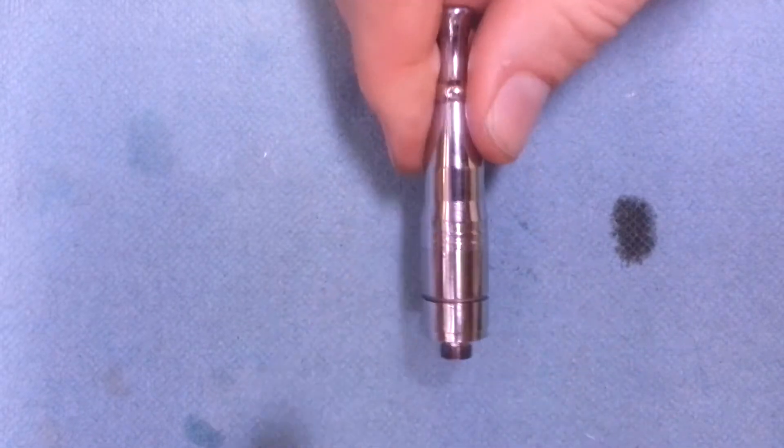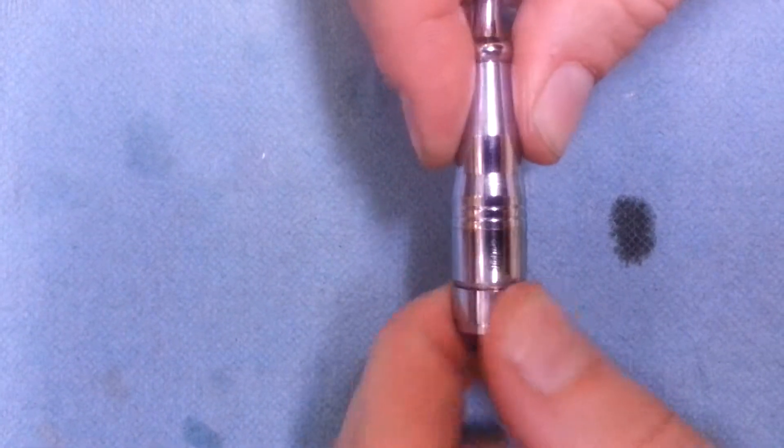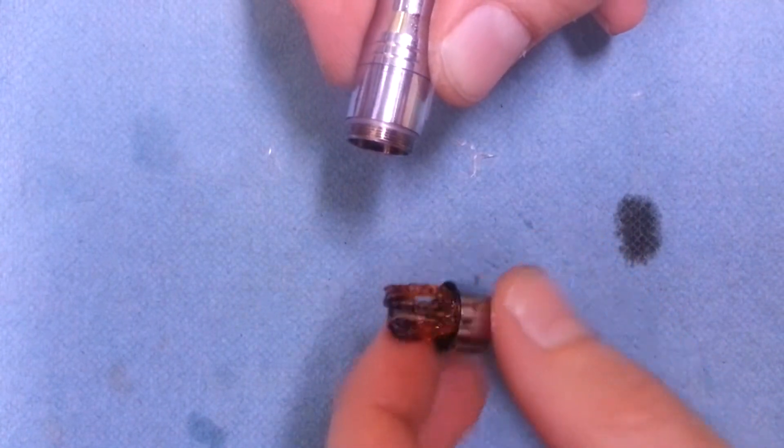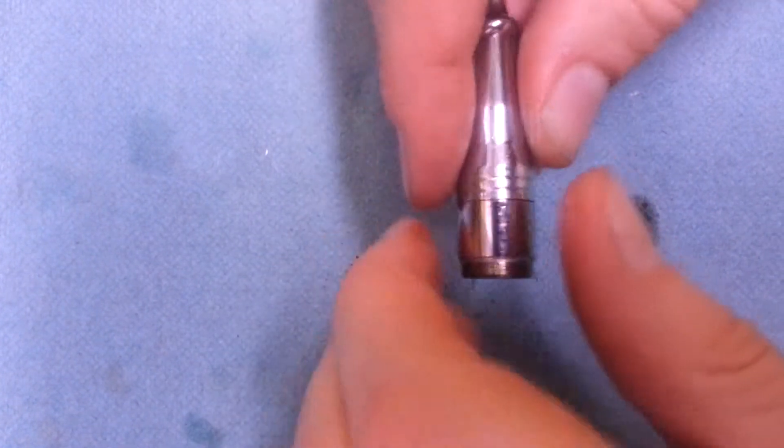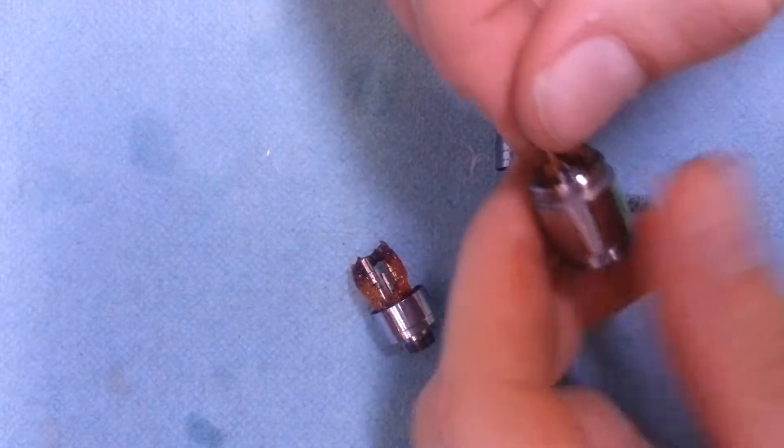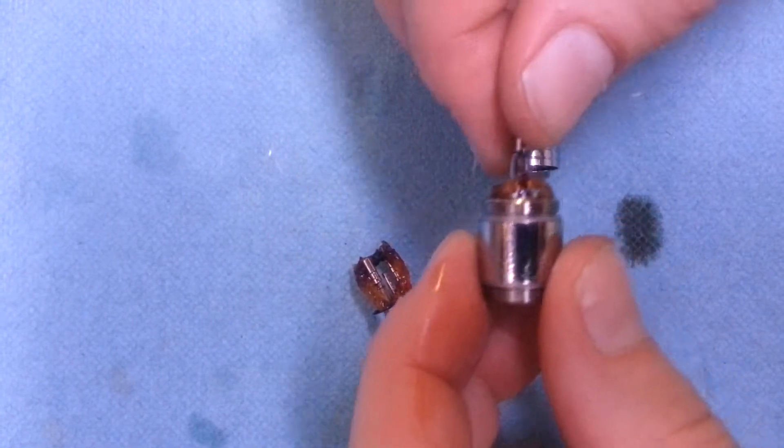I'm going to show you the secondary wick inside this Eternity atomizer. Okay, there's your main wick right there. And in this little area here is your secondary upper wick right there.